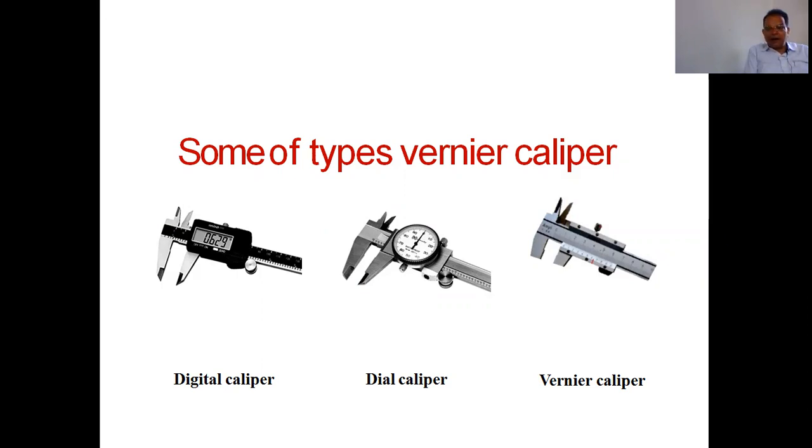And the Dial Vernier Caliper and Digital Vernier Caliper, the reading is in microns. Microns means 0.001. The Dial Vernier Caliper and Digital Vernier Caliper are used more for quality control.